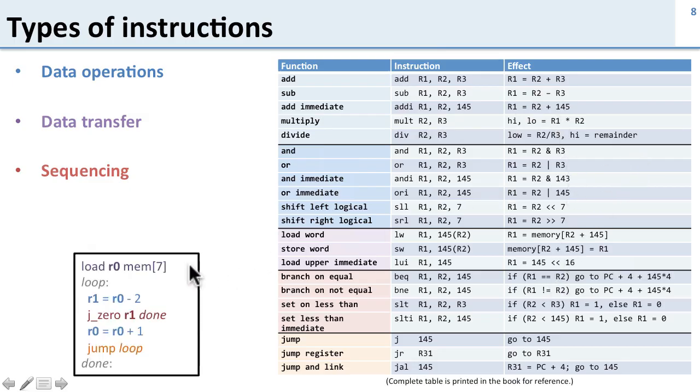And if you look at the sample code we had before this is very similar. So in the sample code we had some data transfer, we had some sequencing, and we had some data operations. So these are the same sort of instructions we saw in the example before but these are the ones that are actually the way MIPS works. So let's walk through some of them.